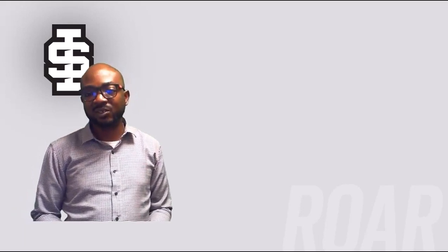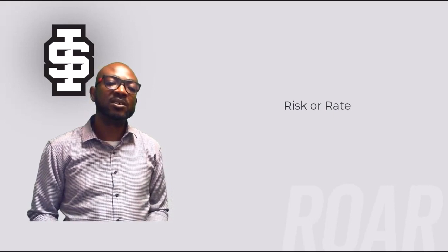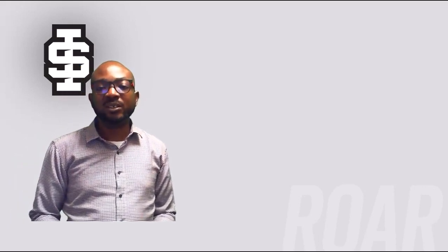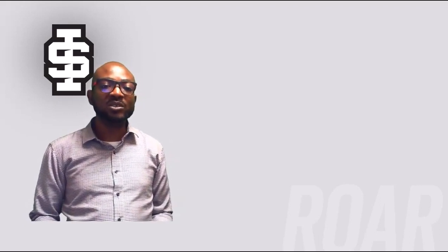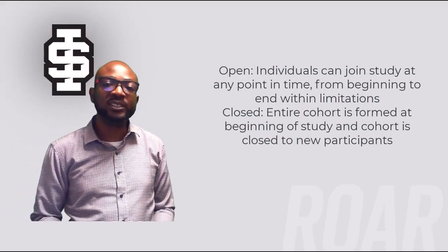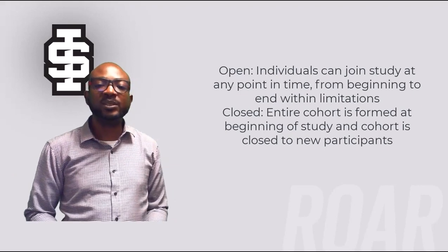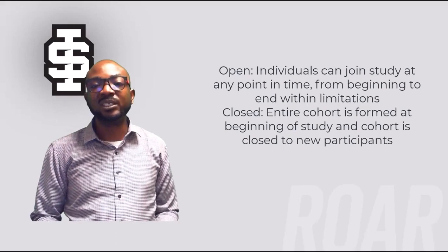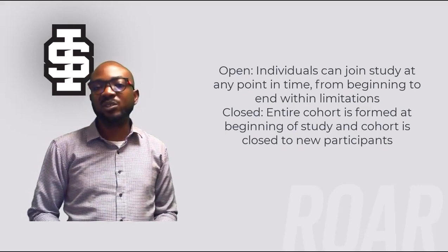A common measure of health outcome occurrence in a cohort study is a risk or rate. Since cohort subjects are chosen to be free of the outcome of interest at the outset, only new health outcome events such as diseases, behavior change, injury, or health improvement are considered. Cohort study populations can be open or closed. In an open cohort, individuals are allowed to join the study at any point in time. In a closed cohort, the entire cohort is formed at the beginning and is closed to new participants. An open study population collects person-time and is less prone to problems with sample size because subjects can contribute person-time even if they are only in the study for a short time.